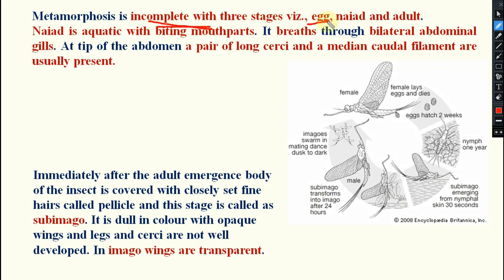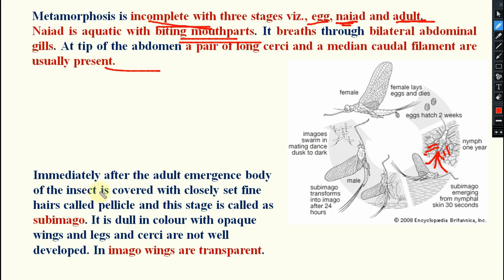Metamorphosis is incomplete with only three stages: egg stage, larval stage known as naiad, and adult stage. Naiads are aquatic with biting-type mouthparts and breathe through bilateral abdominal gills. In the naiad stage, bilateral gills are present at the abdomen for respiration, along with a pair of long cerci and a median caudal filament.